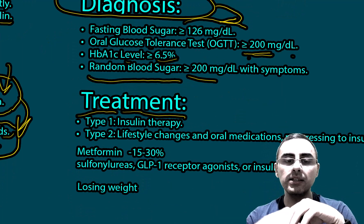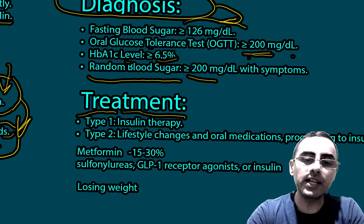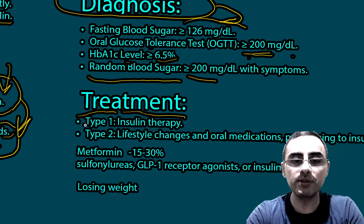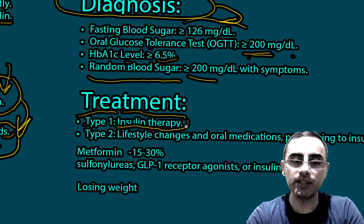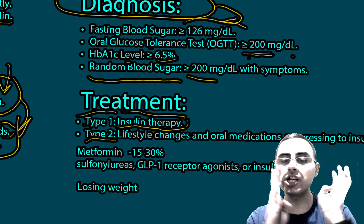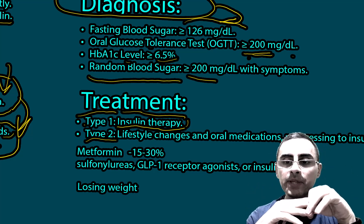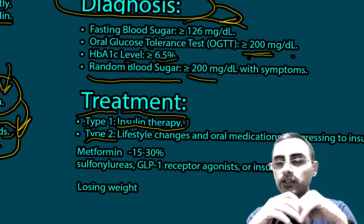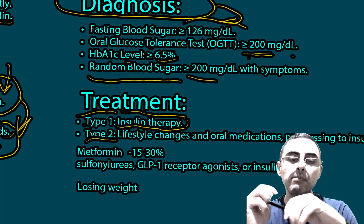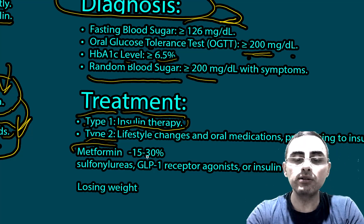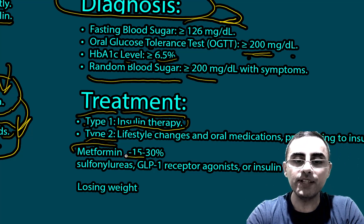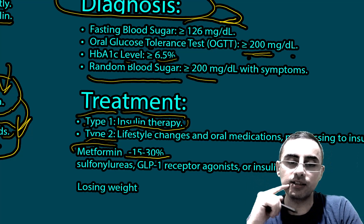For treatment: in Type 1 diabetes, insulin therapy is always required, either by injection or an artificial pancreas. In Type 2 diabetes, treatment involves lifestyle changes, oral medications, and sometimes insulin as well. Metformin is the first-line treatment and can reduce blood glucose levels by 15 to 30 percent.